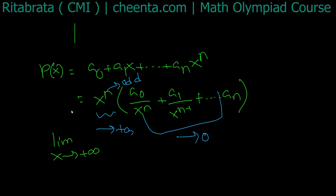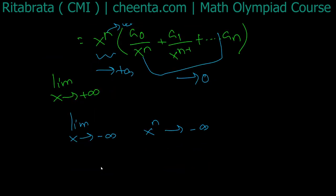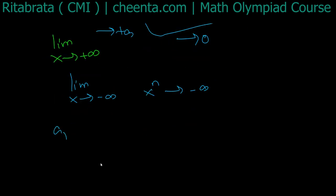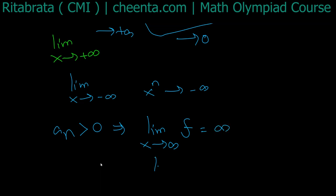So as x goes to infinity and minus infinity, the behavior depends on the sign of the leading coefficient. If the leading coefficient is positive, the limit as x tends to plus infinity is plus infinity, and the limit as x tends to minus infinity is minus infinity.